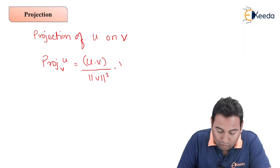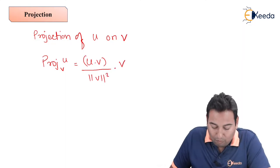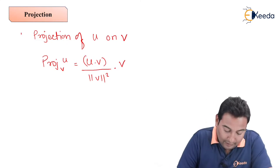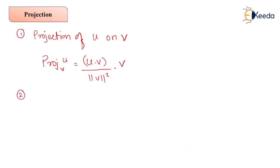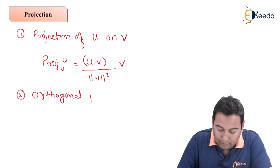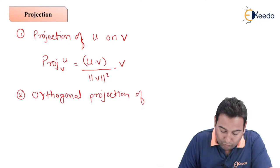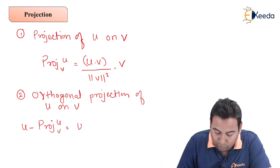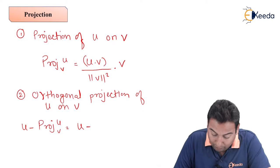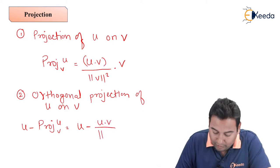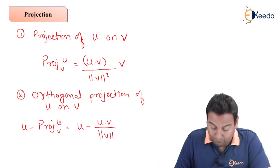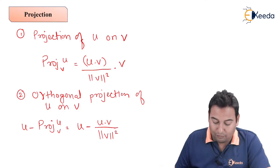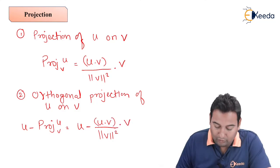This is the formula of projection of u on v. And the next formula is orthogonal projection of u on v, which is u minus projection of u on v, which equals u minus u dot v upon norm of v squared times v.